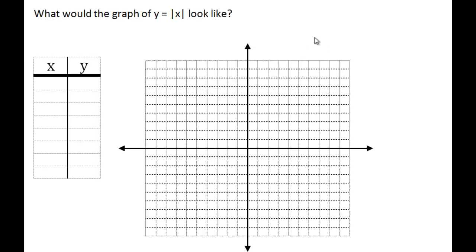So what does the graph of y equals the absolute value of x look like? Let's put some points in. If x is negative 3, the absolute value of negative 3 is 3. When x is negative 2, y becomes 2. When x is negative 1, the absolute value of negative 1 is 1. When x is 0, the absolute value of 0 is 0.